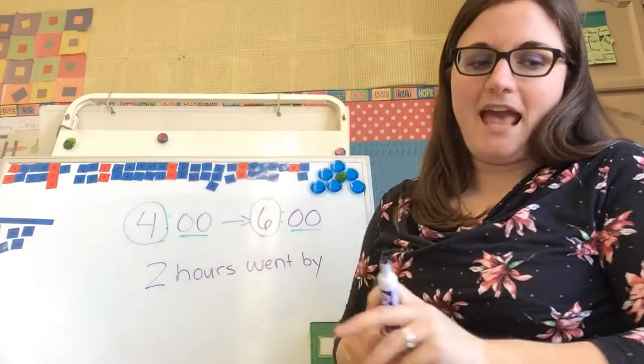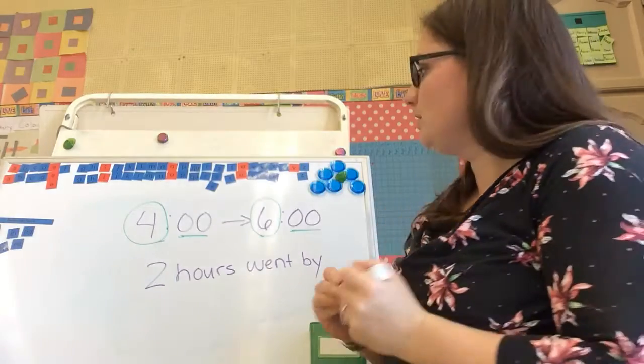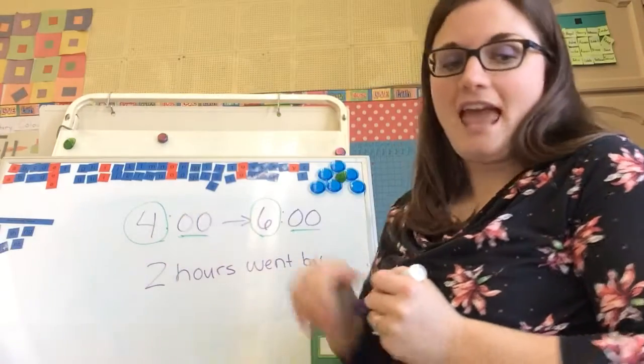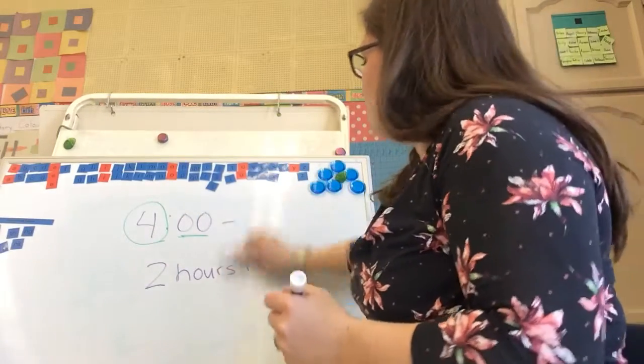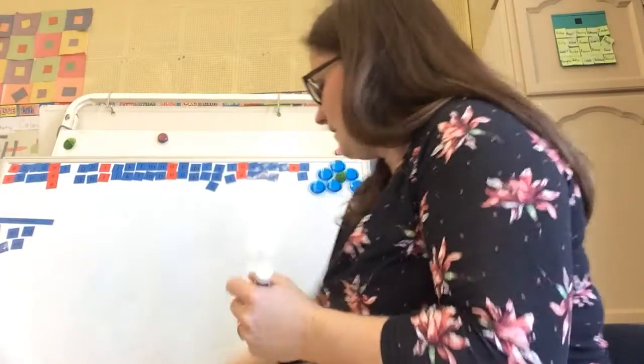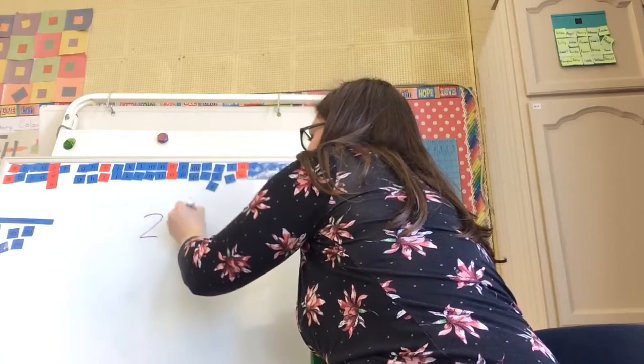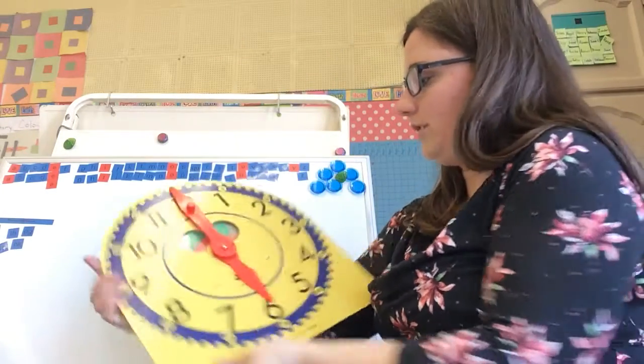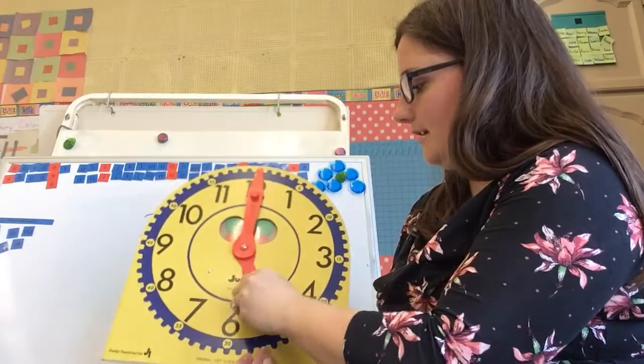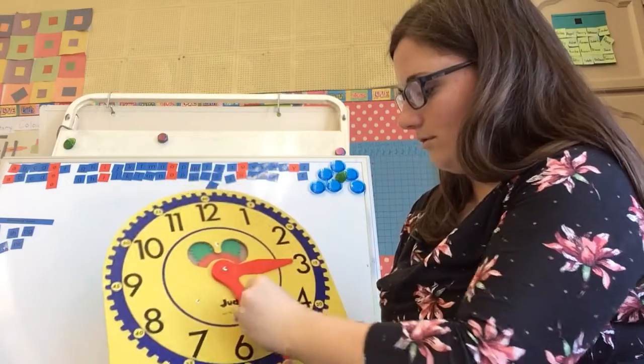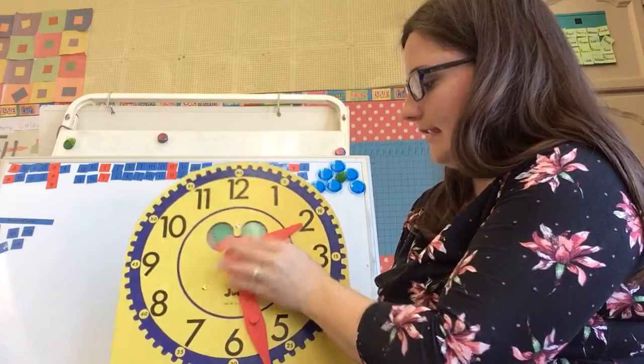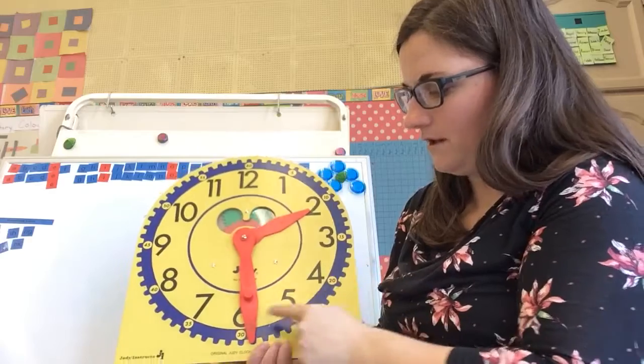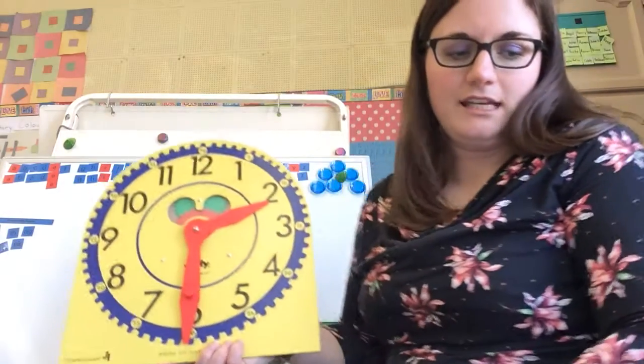Two hours passed by. If you look at the times and the minutes aren't changing, then you can just look at the hours. My next time is 2:30. Let's get our clock up here to 2:30. The little hand's at the 2 and the big hand's down at the 6, because it's 5, 10, 15, 20, 25, 30. So we've got 2:30 here.